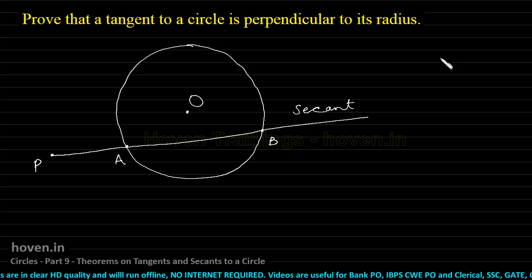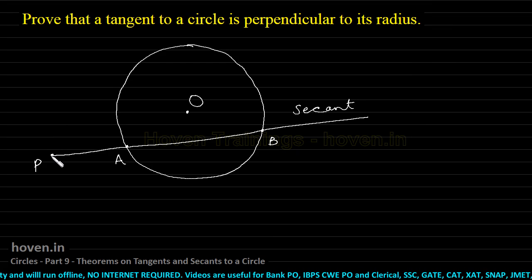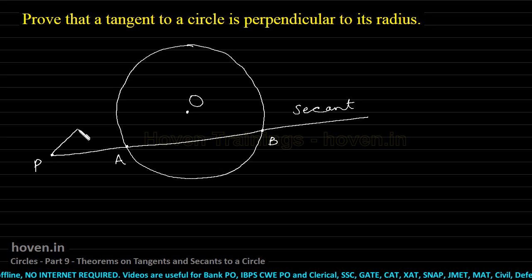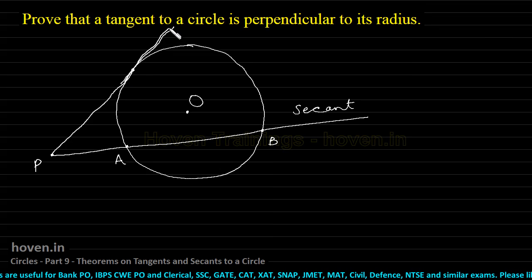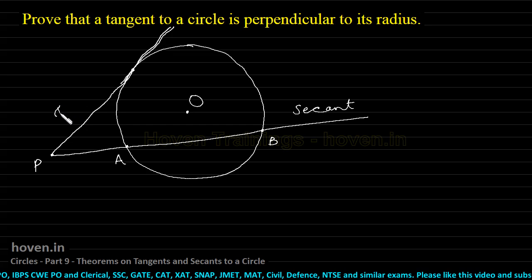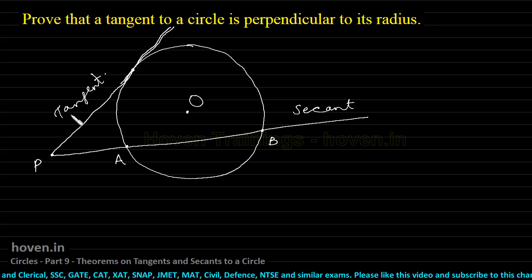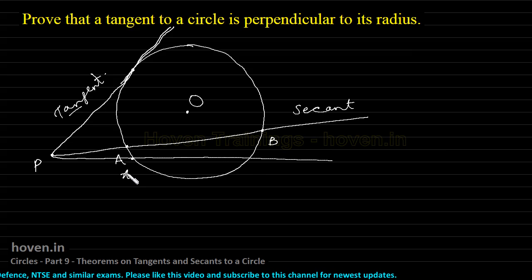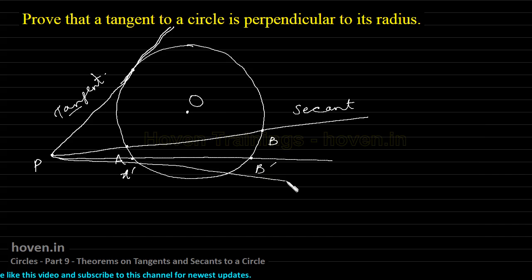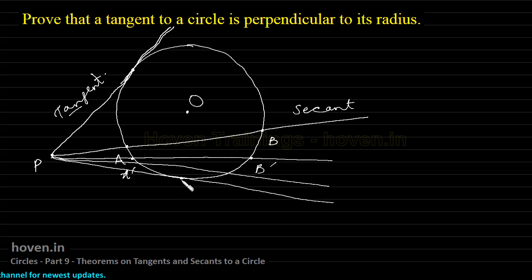Different from a secant is a tangent. Suppose from the same point P, I draw a line that just touches the circle and passes away — a line that merely touches it is called a tangent. If I keep moving the secant toward the outside periphery, this point becomes A dash, this becomes B dash, and as I continue moving it out, the secant begins to touch the circle and changes into a tangent.